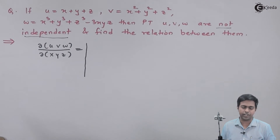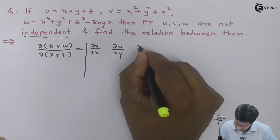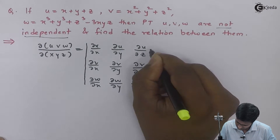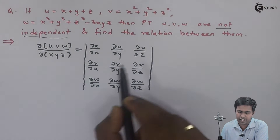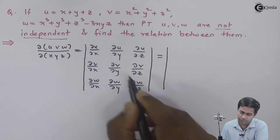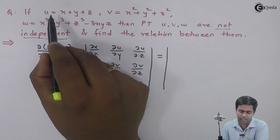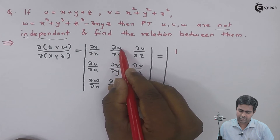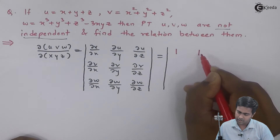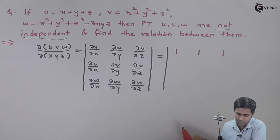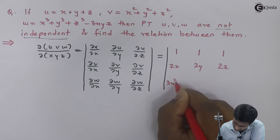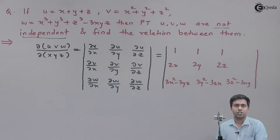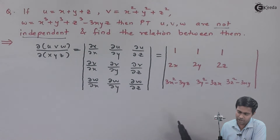The Jacobian is nothing but the determinant of nine elements. Now let's find the value of each and every element. We get the first element by partially differentiating u with respect to x, giving value one. The second value is again one, the third one is again one, and we fast forward to get all remaining elements.